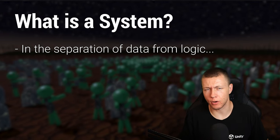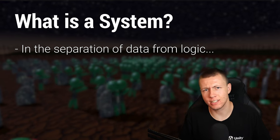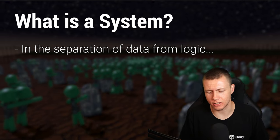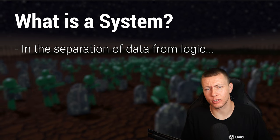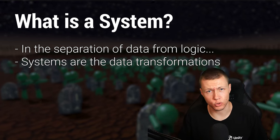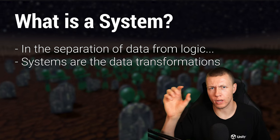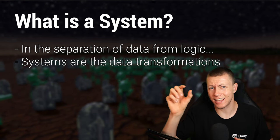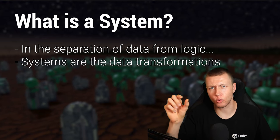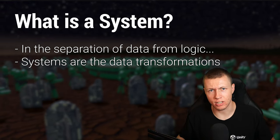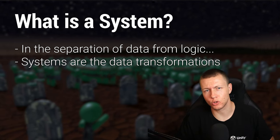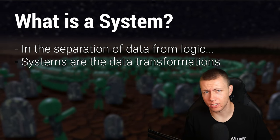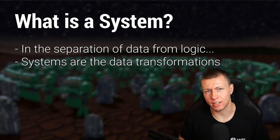So what is a system? In ECS, it's a separation between Entities, Components, and Systems — essentially a separation between data and the logic that transforms that data. The data is held inside components, and systems are what actually perform the transformations on that data. For example, if an object is at a world position and we want to move it, a system takes that data and updates it each frame to reach the target position.